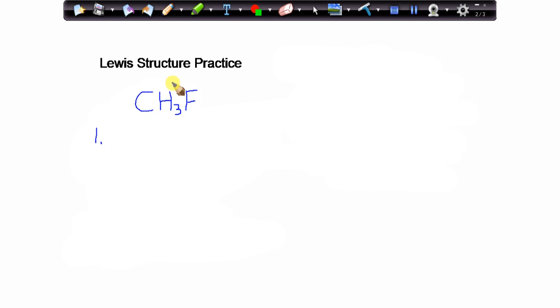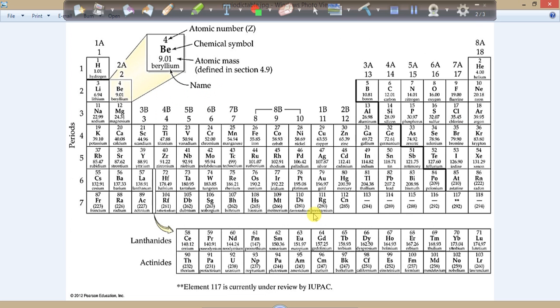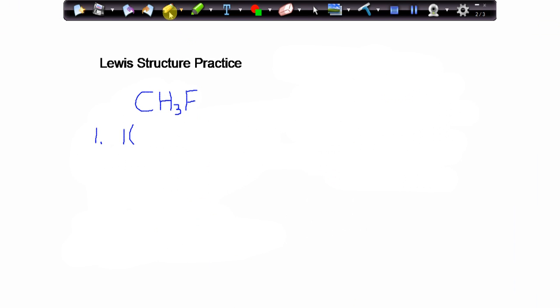So recall that for these main group elements, the group number tells us exactly how many valence electrons that atom has. So let's take a look at carbon. We have one carbon atom. From the periodic table, we can see then that carbon is in group four. So because it's in group four, each carbon atom will contribute four valence electrons.